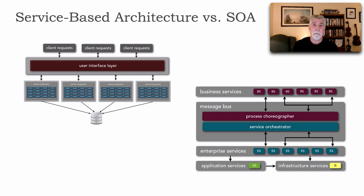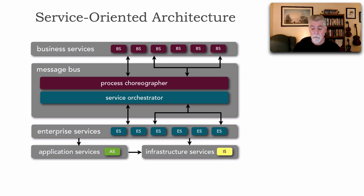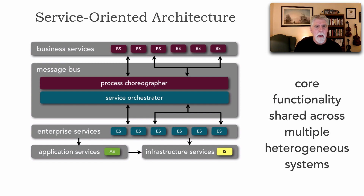That was our nickel tour of service-based. Let's take our nickel tour now of service-oriented architecture. This is a fairly old architecture style that came around 2001, 2002, and became very popular — as much of a hype, as a matter of fact, as microservices. The shape of service-oriented architecture is that core functionality is shared across multiple heterogeneous systems. SOA was really all about reuse of major enterprise services across the organization, and that was its superpower.